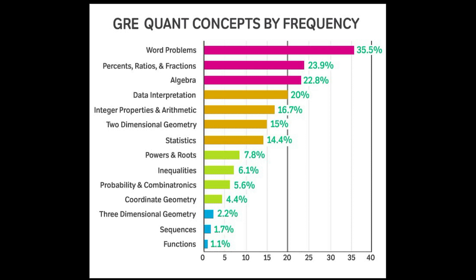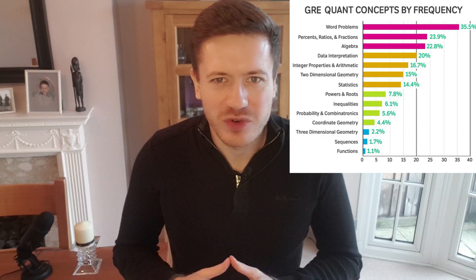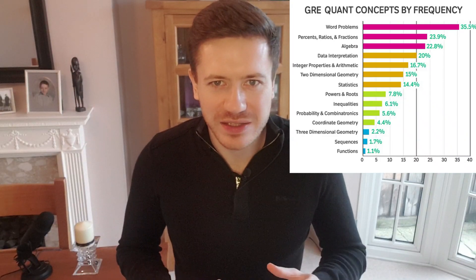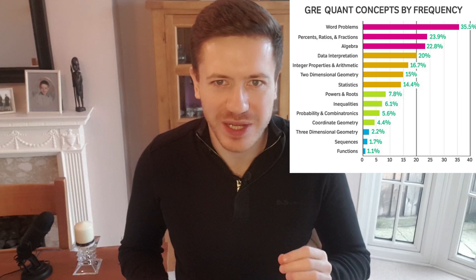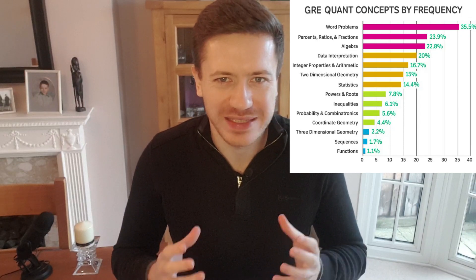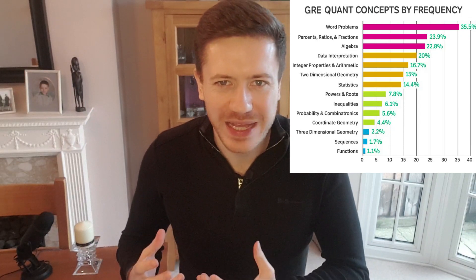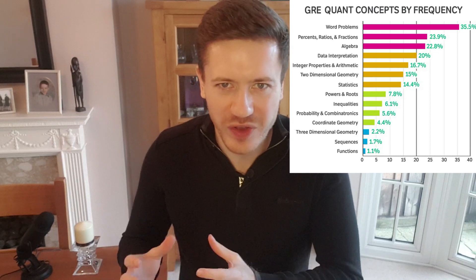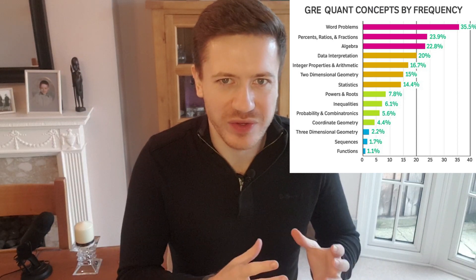If you are going for 170 then you need to know everything and study for everything, but if you're going for a 160 there are topics you need to focus on a lot more than others, and that's what this video is all about. Massive credit to Magoosh for putting this graph together — I've linked the article below. The rest of this video is about what we can take away from this table: what impact it should have on our revision, what we should focus on, and what we should not focus on as much.